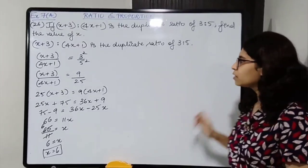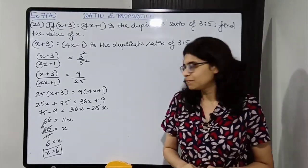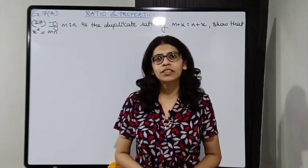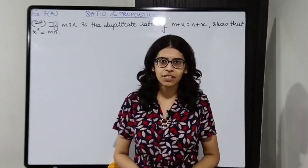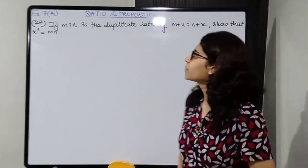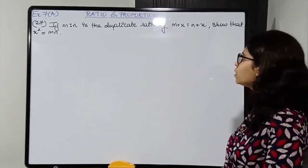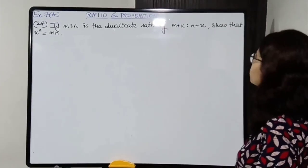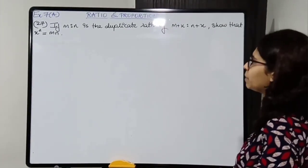Very easy question. Let's read the next question — question number 27. If m is to n is the duplicate ratio of m plus x is to n plus x, show that x squared is equal to mn.